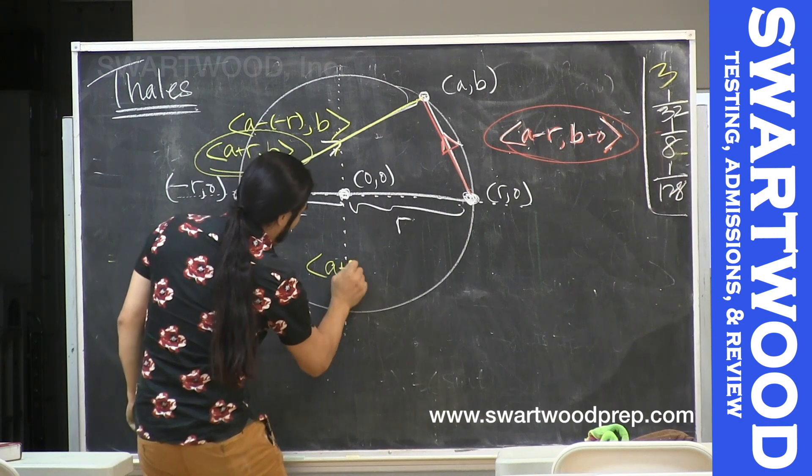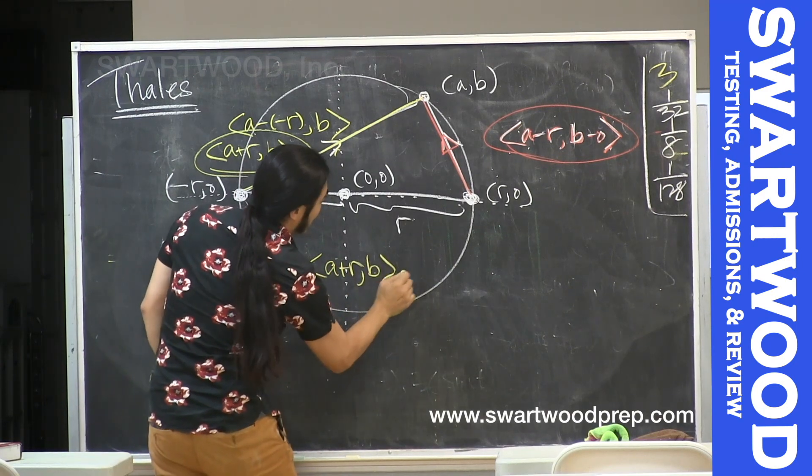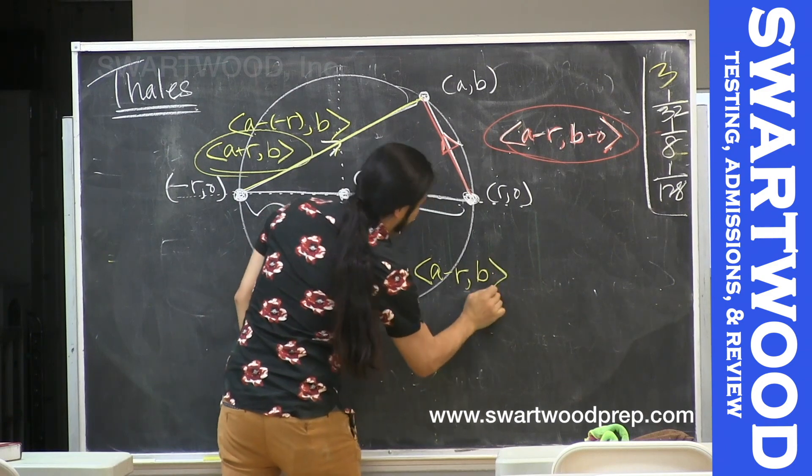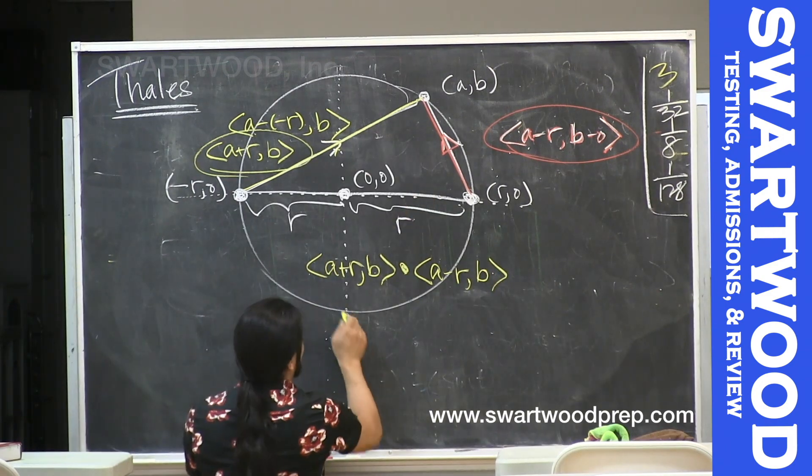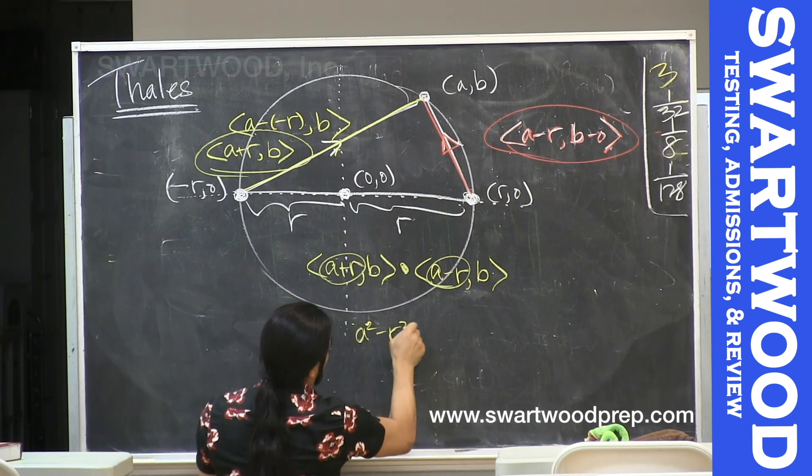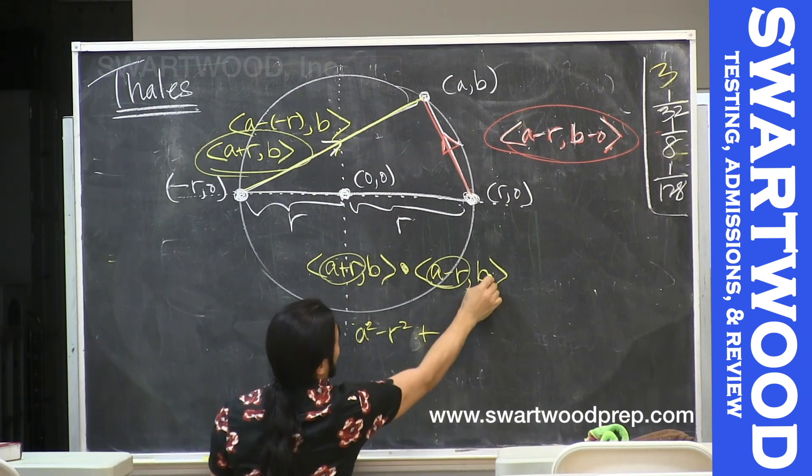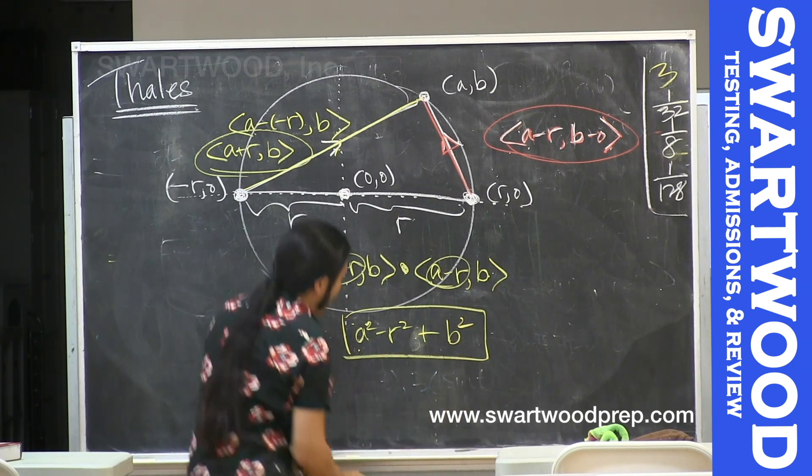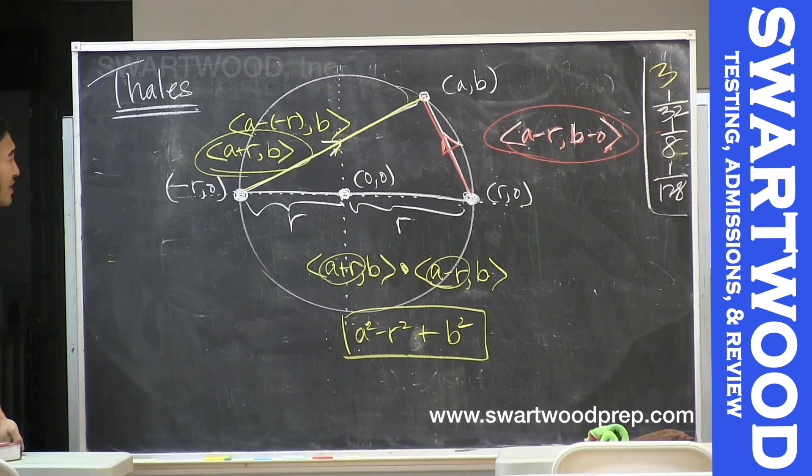So (a + R, b) dot producted with (a - R, b). This guy's gonna be, this term times that term, this can be a² - R², right, plus this term times that term which is b².